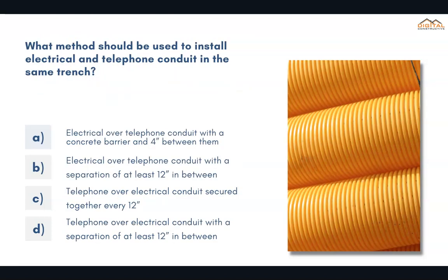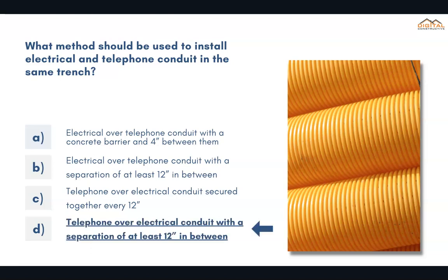What method should be used to install electrical and telephone conduit in the same trench? The correct answer is D: telephone over electrical conduit with a separation of at least 12 inches in between.